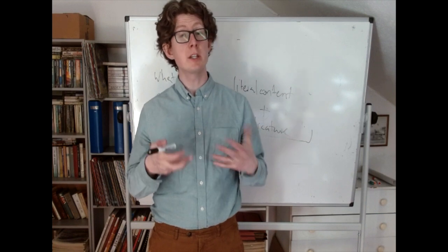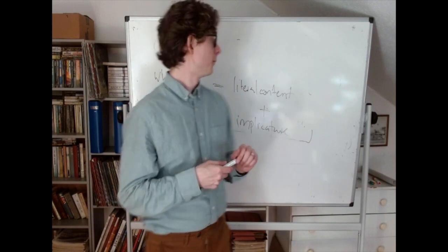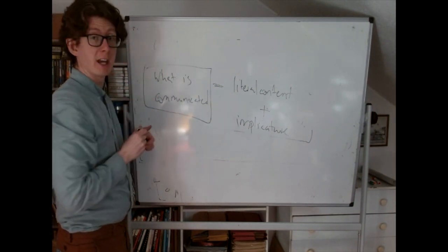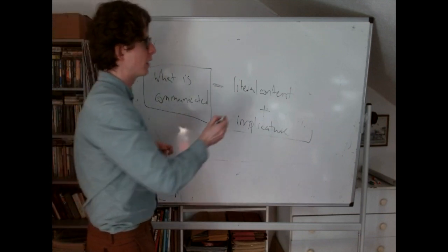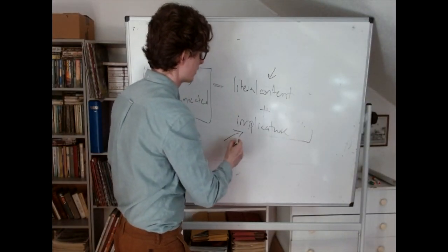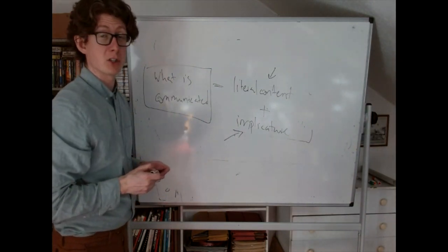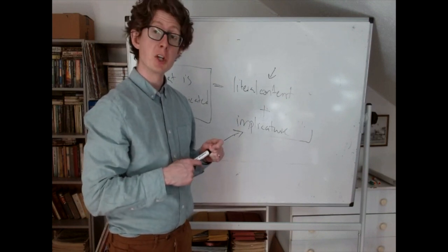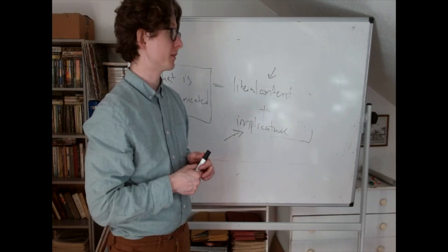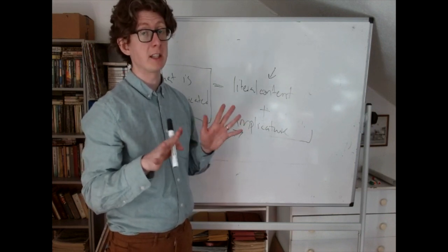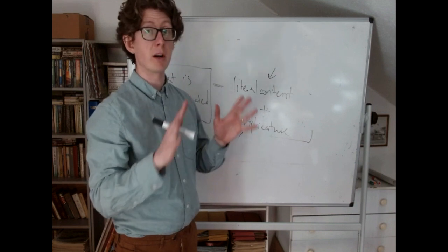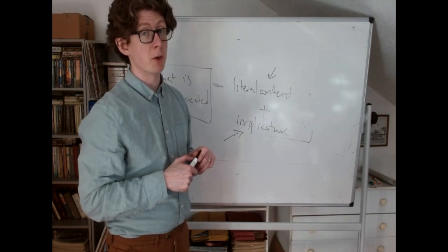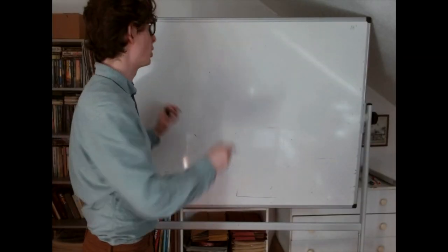Now I want to think about how we know whether something is an implicature or not. We know that there's all this stuff communicated by particular utterances — but how do we figure out which stuff goes in the literal content, and how do we figure out what's an implicature? We're going to talk about some tests for implicature that Grice gives. Grice is clear that he doesn't think these tests are 100% reliable — in some cases they can't be applied or they give the wrong answer — but they're pretty good for the most part. One really important kind of test is what we call cancelability.